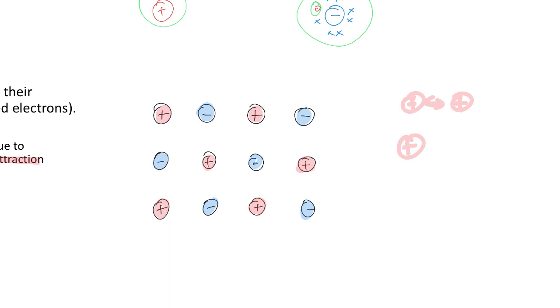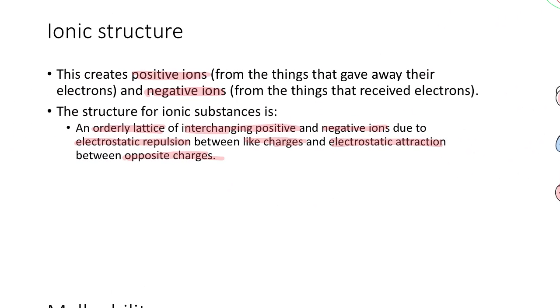But if you put a positive and a negative together, they are going to attract each other, which is going to be good. The idea is that it forms this lattice structure of interchanging so that each of them is attracted to the ones nearby. These are attracted inwards and in every direction so that they are held in place.